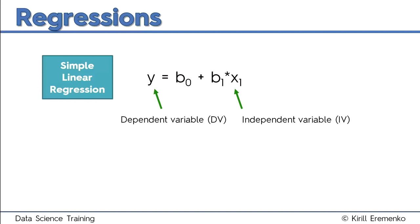X is your independent variable. In simple linear regression, we only have one independent variable, so we can just call it x. This is the variable that you're assuming is causing the dependent variable to change. Or as we will learn, sometimes the independent variable might not be a direct causal factor, but there might be an implied association between the two, and in that case you're trying to figure out this association.